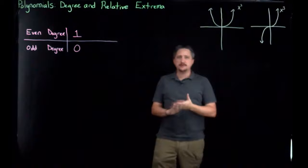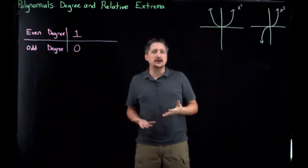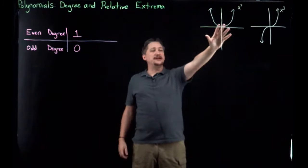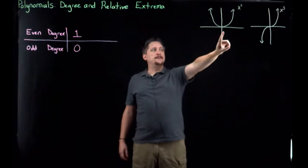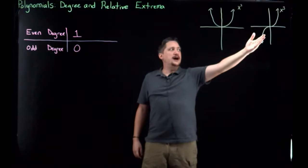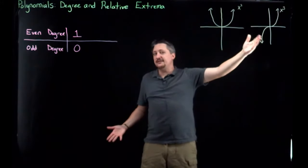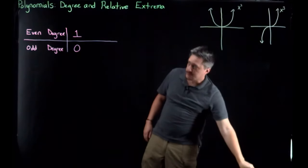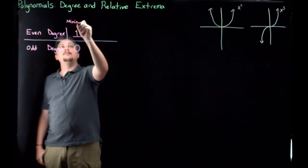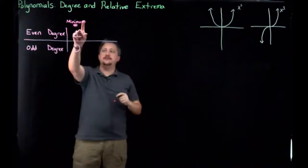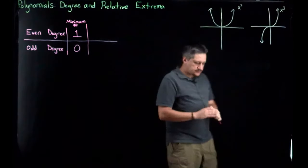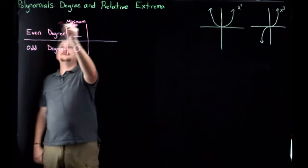Now we're going to talk about relative extrema. Remember that absolute extrema are relative extrema as well. So if I know I have an absolute extrema, then I have at least that many relative extrema. In our even example, because it has an absolute extrema, it must have at least one relative extrema. Whereas for the odd ones, I don't have any absolute extrema — it may still have relative extrema, but it's possible it doesn't have any at all. So this gives us a minimum for relative extrema.